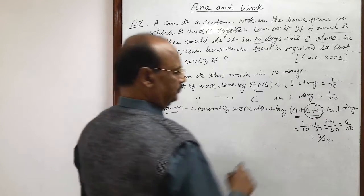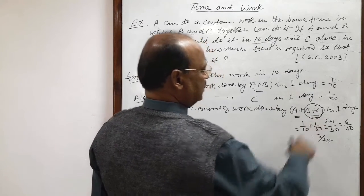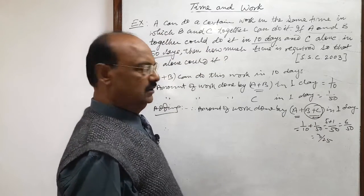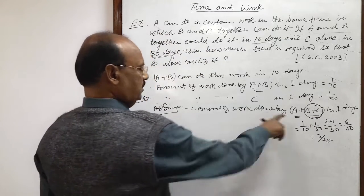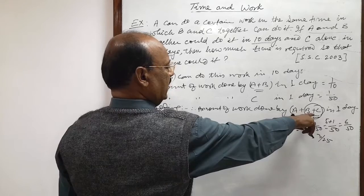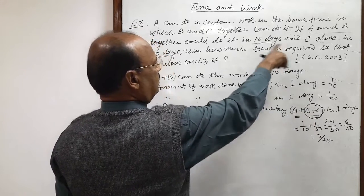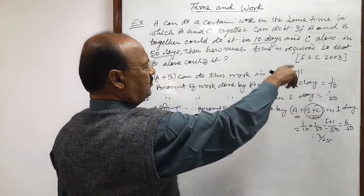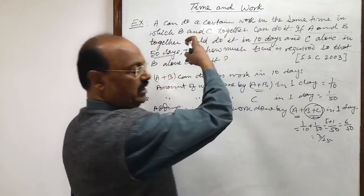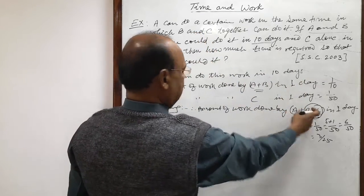Therefore, in place of B plus C, we can write A, means this is A and this is A. Why A? Because B plus C takes the same amount of time that A requires. So this is A and this is A.